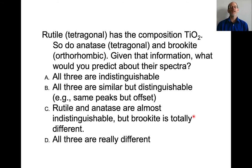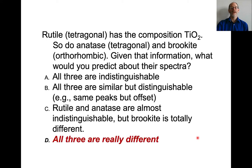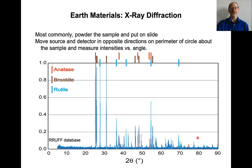So here's a question. Rutile, which is tetragonal, has a composition of TiO₂. Anatase is the same crystal system, and brookite is a different crystal system, but all have the same composition. So given that information, what would you predict about their spectra? It turns out they are all really different.